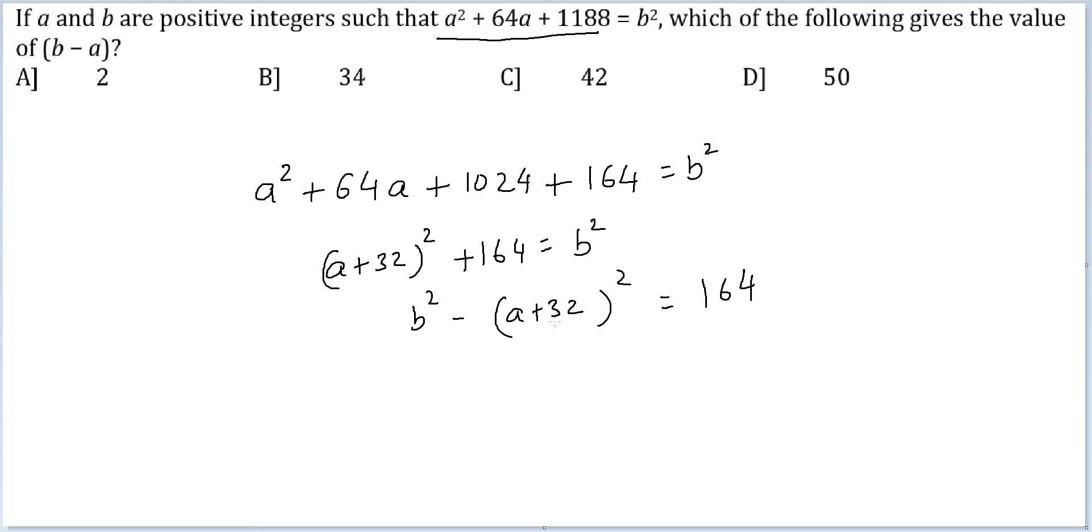Because the difference between these two perfect squares is an even number, the only way it will work is (b + a + 32) and (b - a - 32). Both these expressions will either simultaneously be odd or simultaneously be even. Given that the difference is 164, both of them have to be even.